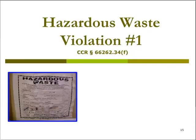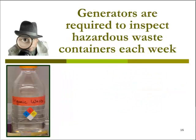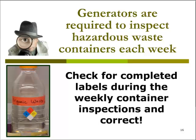Hazardous waste violation number one: a container of hazardous waste is missing a label or is not properly labeled. In this photo, the hazardous waste label has not been properly completed and would therefore be considered a violation. A generator of hazardous waste is required to conduct weekly inspections of their hazardous waste storage area to ensure containers are in good condition and not leaking. During these weekly inspections, the generator should look to ensure a complete hazardous waste label is affixed to each container and, most importantly, correct those that are not. This photo is an example of a labeling violation — it is missing many, if not all, of the required elements.